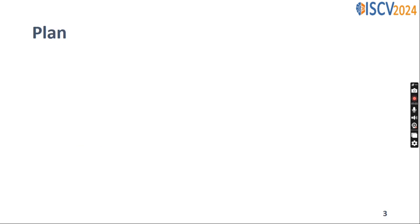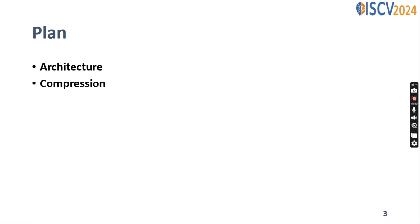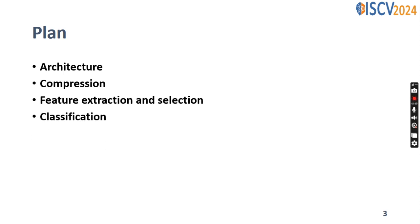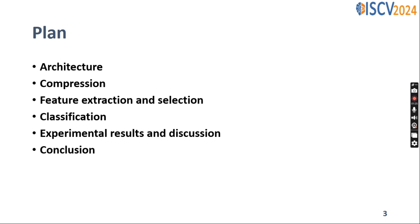The presentation is organized as follows. First, I will describe the architecture of the proposed system. Then, I will present the compression part. After that, I will outline the different approaches used for feature extraction, selection, and classification. Next, I will discuss the results obtained in the study. I will conclude the presentation with a brief summary, and finally I will present the limitations and future work.